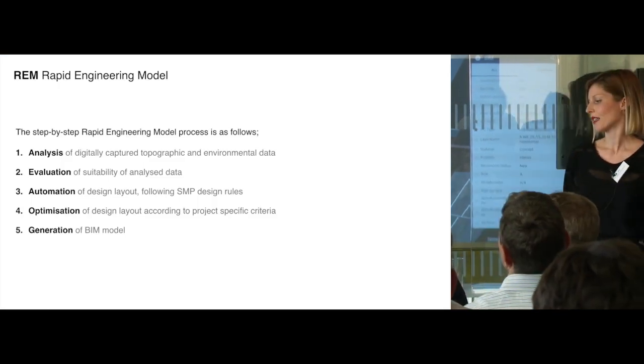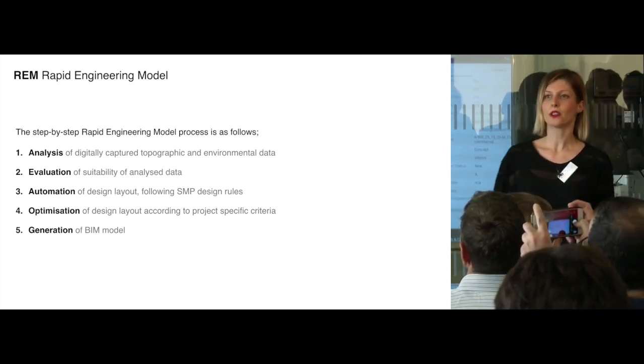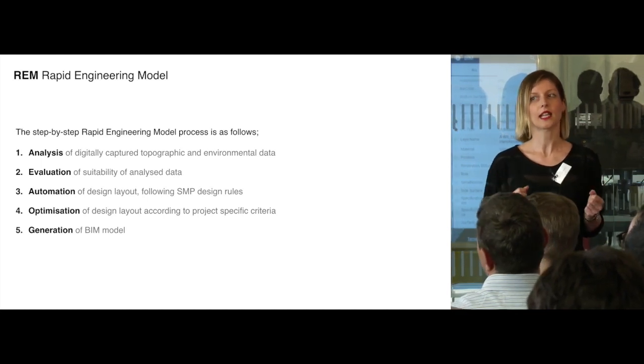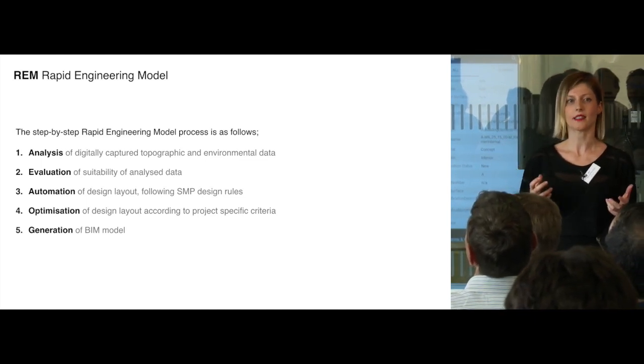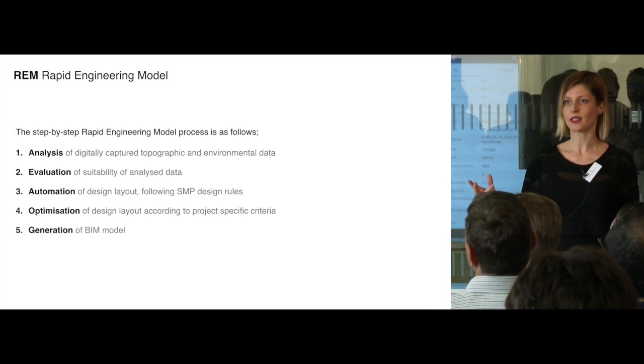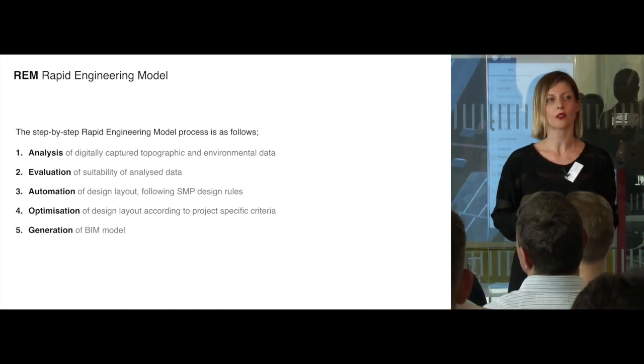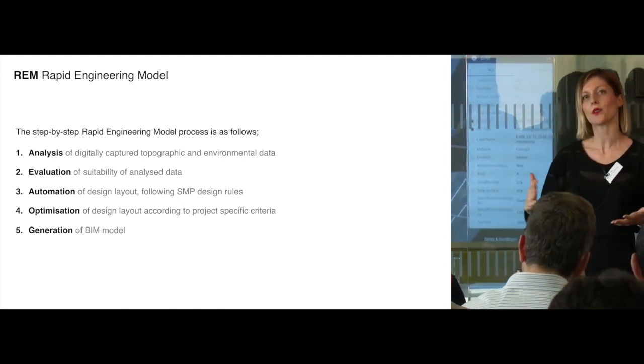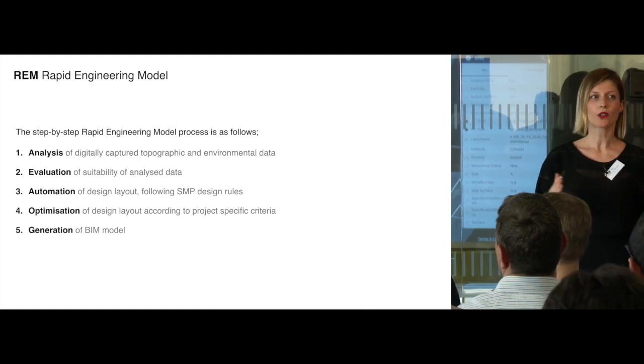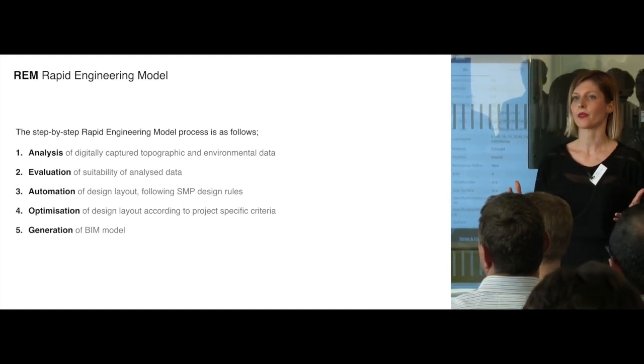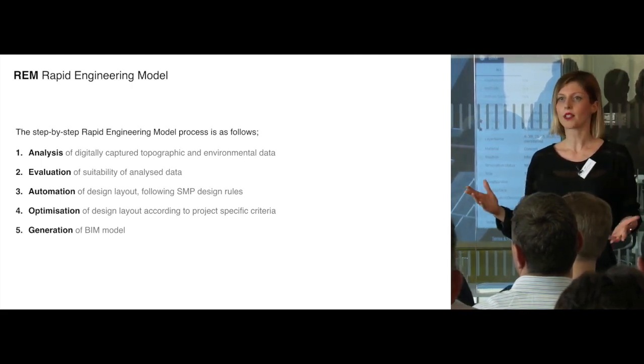The Rapid Engineering Model process is made up of five basic principle steps. First, we analyze the data we collect and describe the existing conditions of a road. Then we evaluate this data set and understand risks and opportunities on the specific scheme. Once we have collected this information, we can create a layout through an automated process. The layout can be optimized either through the process itself or through collaborative sessions. At the end, we can generate different outputs based on this information, and one of these outputs could be a BIM model.